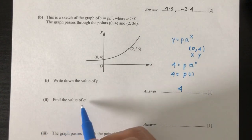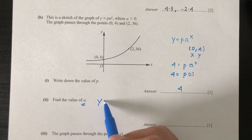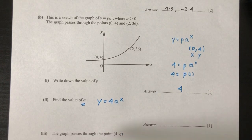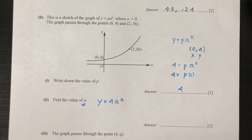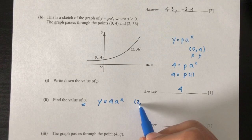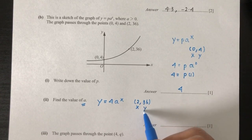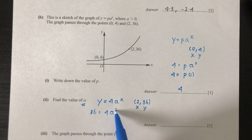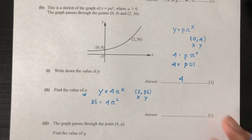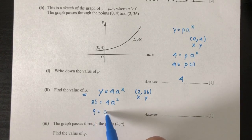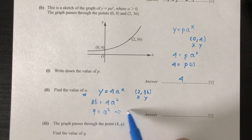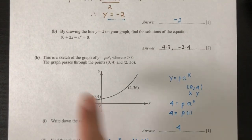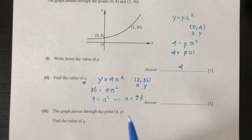Now we have to find the value of a. The equation is now y equals 4 times a to the power x. Using the other point (2, 36): replace to get 36 equals 4 times a squared. Dividing both sides by 4 gives 9 equals a squared, so a equals plus or minus 3. Since a must be positive, a equals 3.